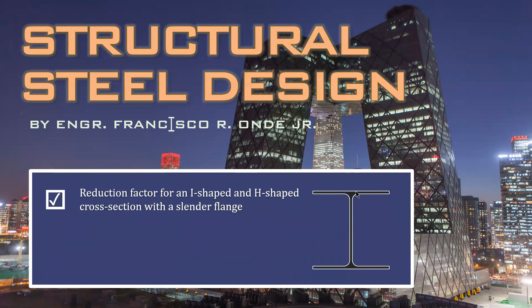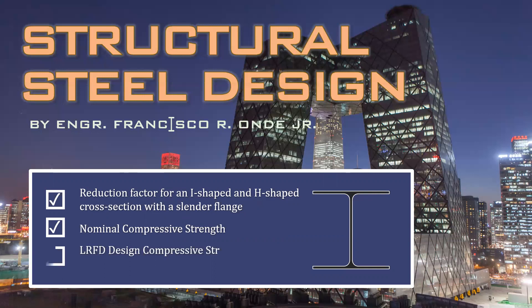Slender means the width-to-thickness ratio is too large — the member is too thin. If it is slender, it will fail first at local buckling before it fails globally. We're going to calculate the nominal compressive strength using those reduction factors, and also the LRFD design compressive strength and the ASD allowable compressive strength of the column.